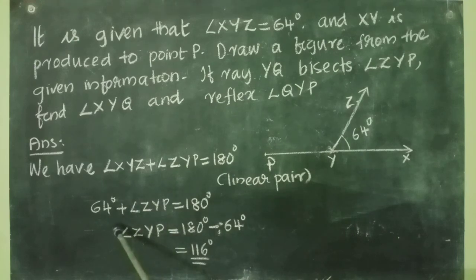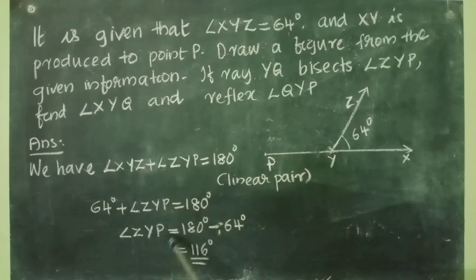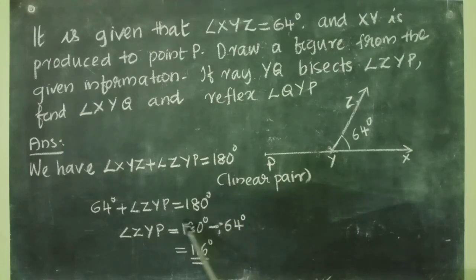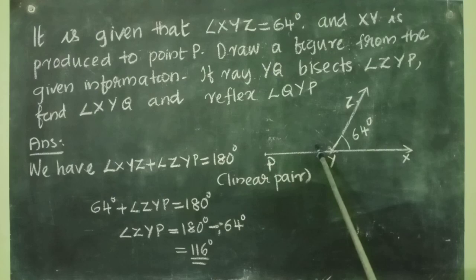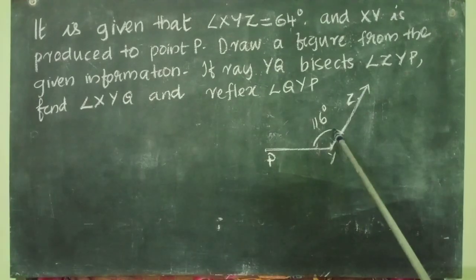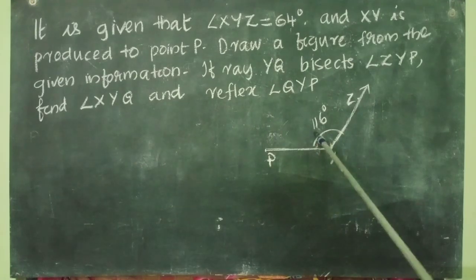So we can write: angle XYZ plus angle ZYP equals 180 degrees. The reason is linear pair. We know angle XYZ equals 64 degrees, as given in the question. So we write: 64 degrees plus angle ZYP equals 180 degrees. Therefore angle ZYP equals 180 degrees minus 64 degrees, so we get angle ZYP equal to 116 degrees.